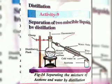We will separate the two miscible liquids, water and acetone, by the distillation process. The materials required to perform this activity are: a stand and distillation flask, thermometer, condenser, beaker, acetone, water, and a rubber cork.